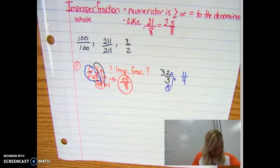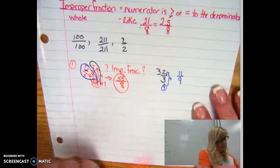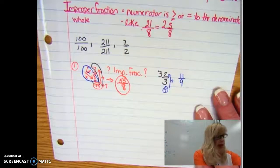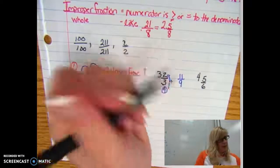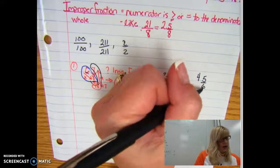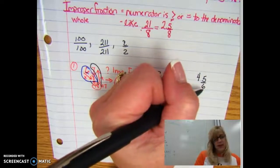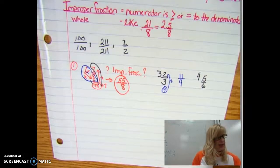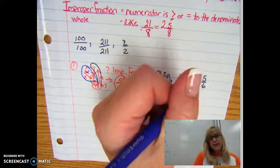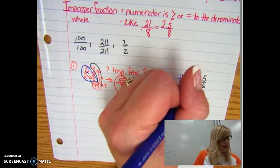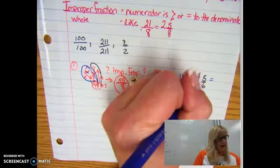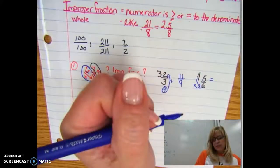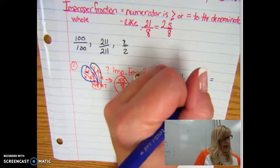All right, last one. Let's try four and five sixths. We have four wholes and we know that we want to cut them into pieces that are the size of a sixth. Pause the video if you haven't already and try this one. Make it into an improper fraction.